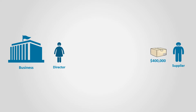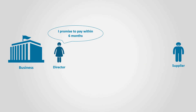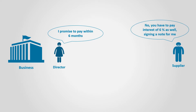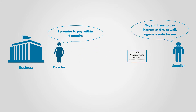What if the business bought goods for $400,000 and asked for six months to pay? The supplier in this case could ask the business to sign a promissory note that bears interest and has a maturity date. In our example, the supplier asks for 6% and to be paid after six months. The business signs the note and passes it over to the supplier.